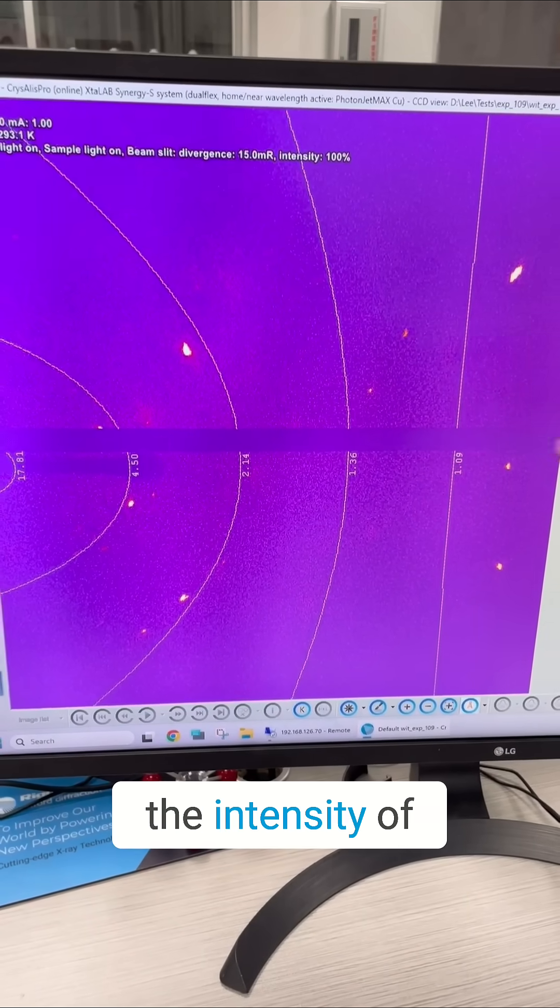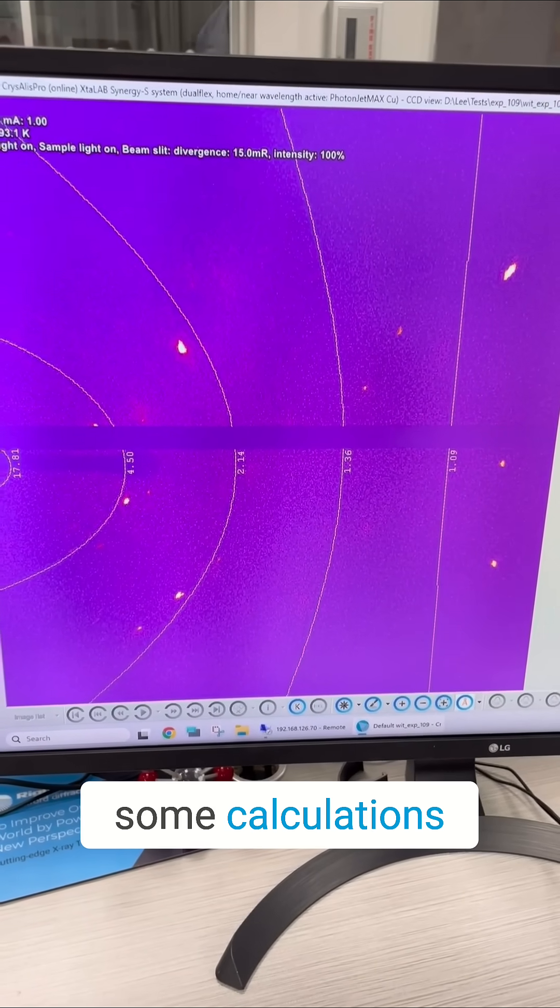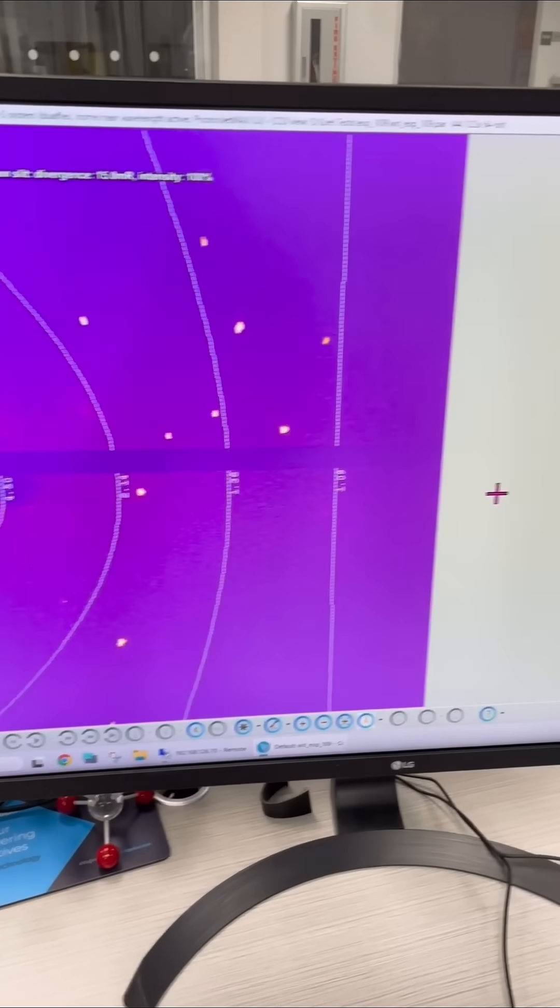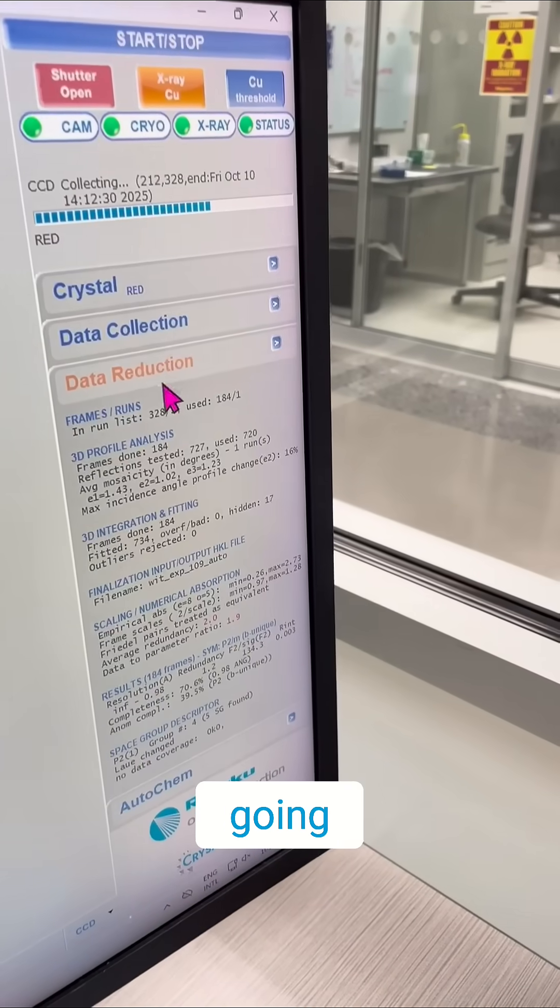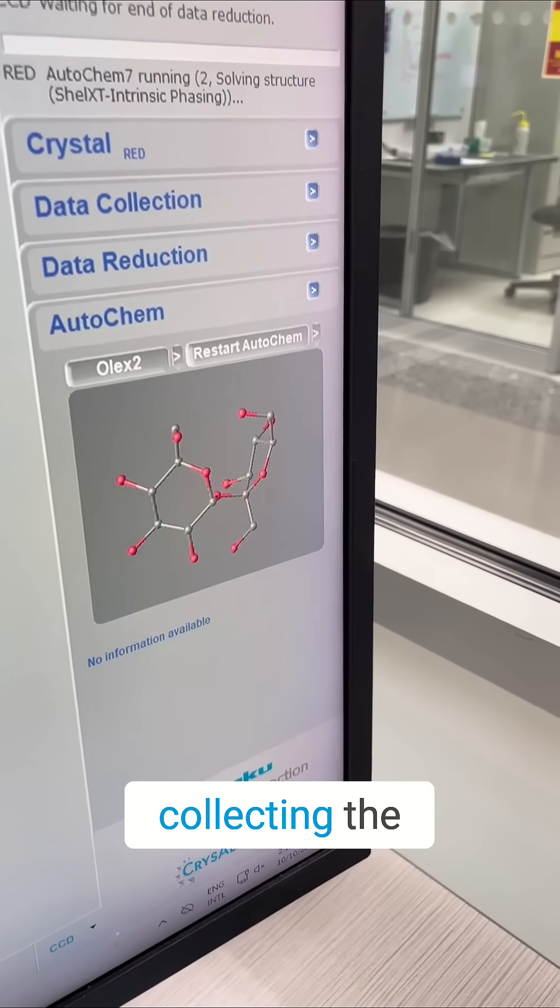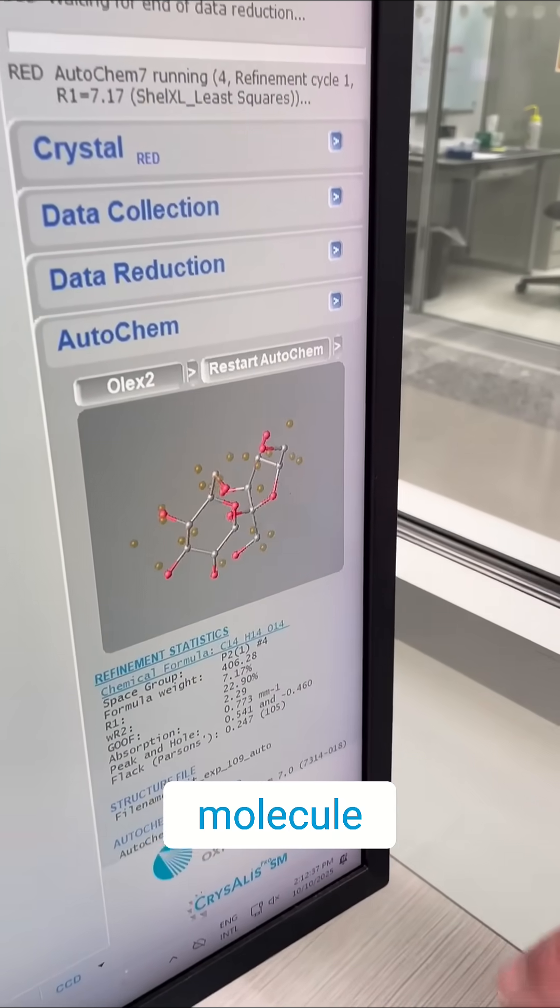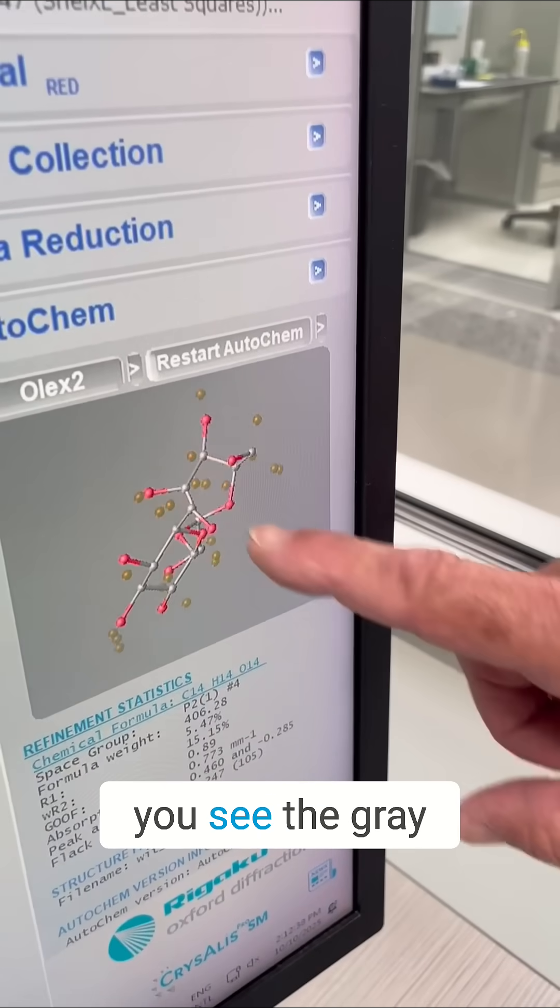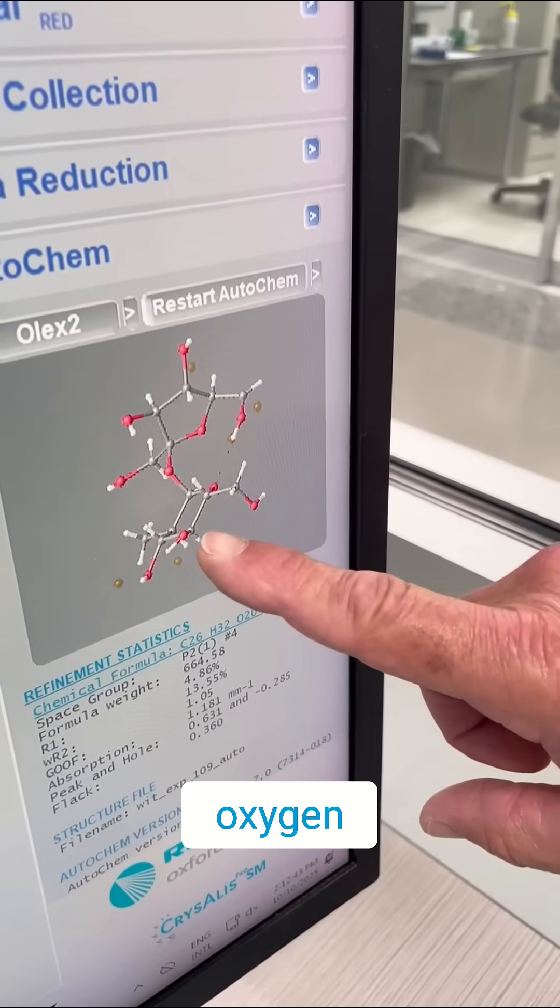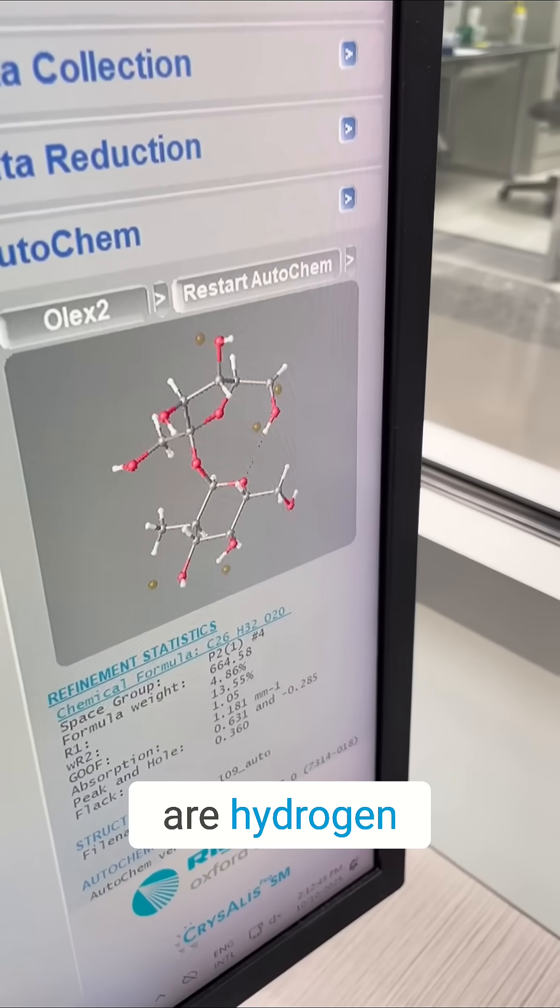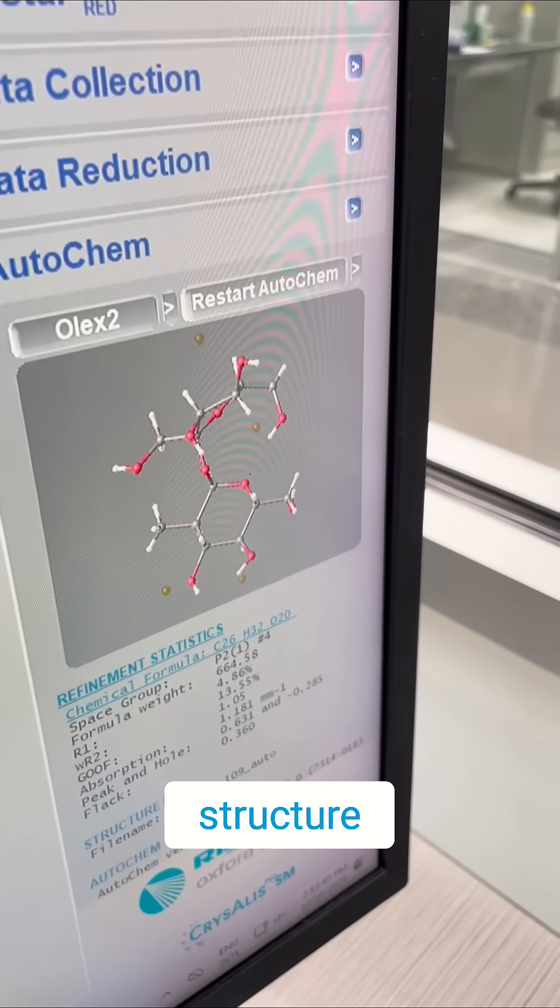And so we measure the intensity of those and then we do some calculations. And if we look over here, we see that there's a data reduction going on. It's done collecting the data. And now a molecule has popped up and you see the gray ones are carbon, the red ones are oxygen, the white ones are hydrogen. And that's the structure of sugar.